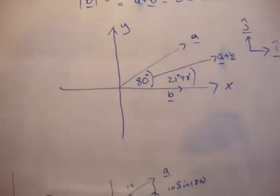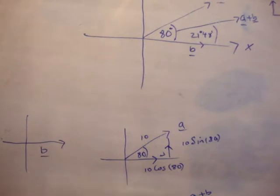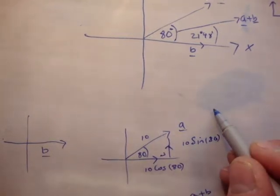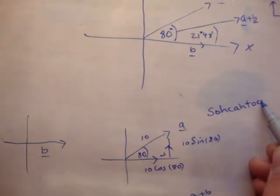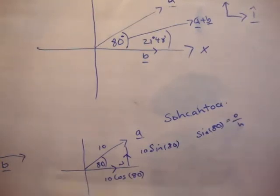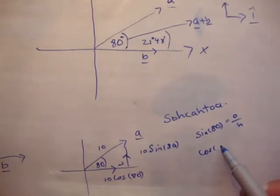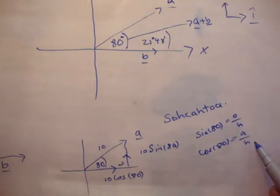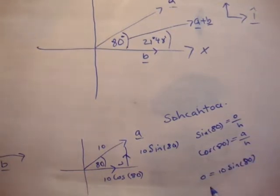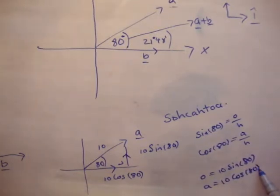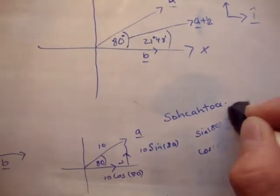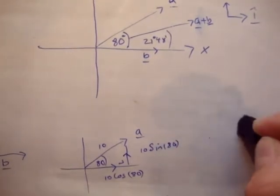I've drawn the vector a at 80 degrees north of east with a magnitude of 10, which we're given. Using SOH-CAH-TOA: sine of 80 equals opposite over hypotenuse, and cosine of 80 equals adjacent over hypotenuse. The hypotenuse is equal to 10, so the opposite is equal to 10 sine of 80 and the adjacent is equal to 10 cosine of 80. I've drawn 10 sine 80 on the y-axis and 10 cosine 80 parallel to the i-hat unit vector.